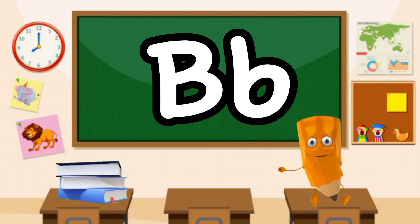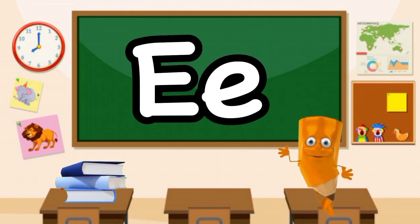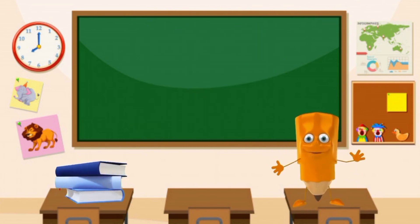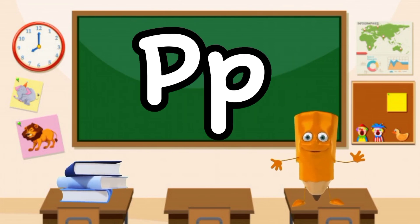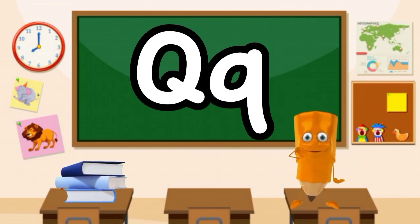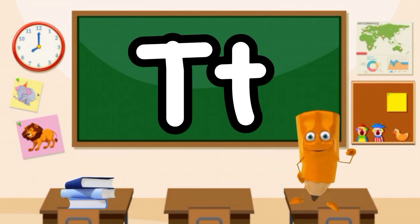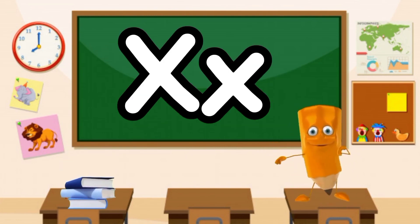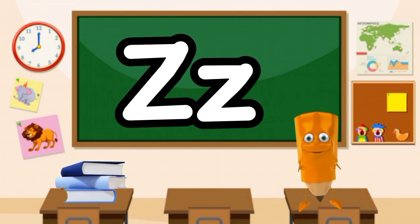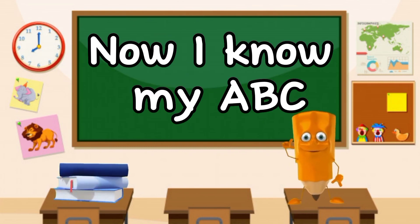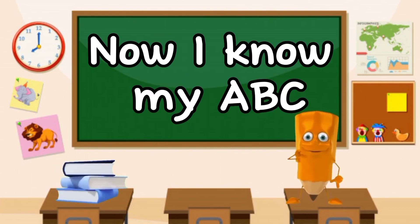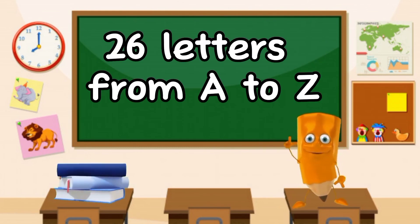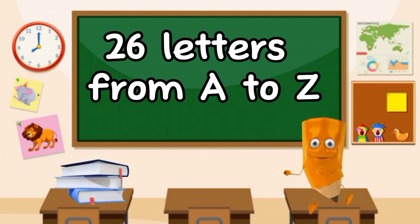A, B, C, D, E, F, G, H, I, J, K, L, M, N, O, P, Q, R, S, T, U, V, W, X, Y, and Z. Now I know my ABC, 26 letters from A to Z.